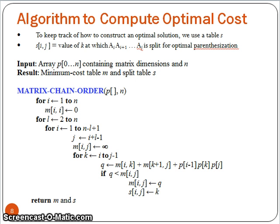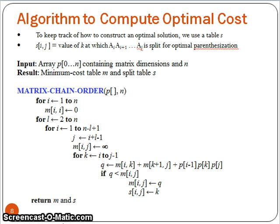Whenever we get that minimum value, we store the value of k — the index for which we get this minimum — in a separate array s. The s array tells us in what sequence to follow the split, while m[i][j] stores the cost of multiplying. So m[i][j] = q means multiplying matrices a_i to a_j requires cost q, and s[i][j] = k means to multiply a_i to a_j optimally, we must split at position k. Note that s[i][j] values are stored in the upper triangular part of the matrix.